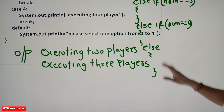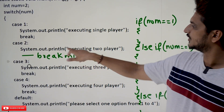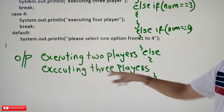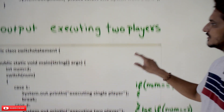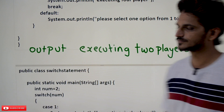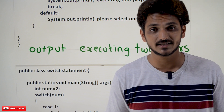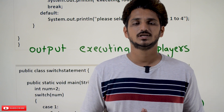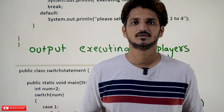So the output in this example, where the break is missing after case 2, is 'executing two player' and 'executing three player'. The code is available on our website — you can check, download, and execute it. Hope you understand this example. If you have any questions, please post them in the comment section below. Thanks for watching. If you haven't subscribed to our channel, please subscribe and press the bell icon for the latest updates. Thank you.